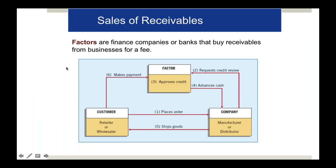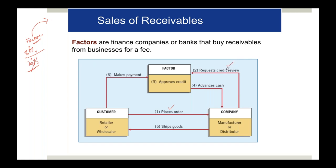Now, sale of receivables is different from factoring. In factoring, you receive 80% now and 20% when the factor collects from the customer. In an outright sale of receivables, the process involves reviewing the customer's creditworthiness, approving credit, advancing cash, shipping goods, then making payment - but we don't want to hold any amount pending.